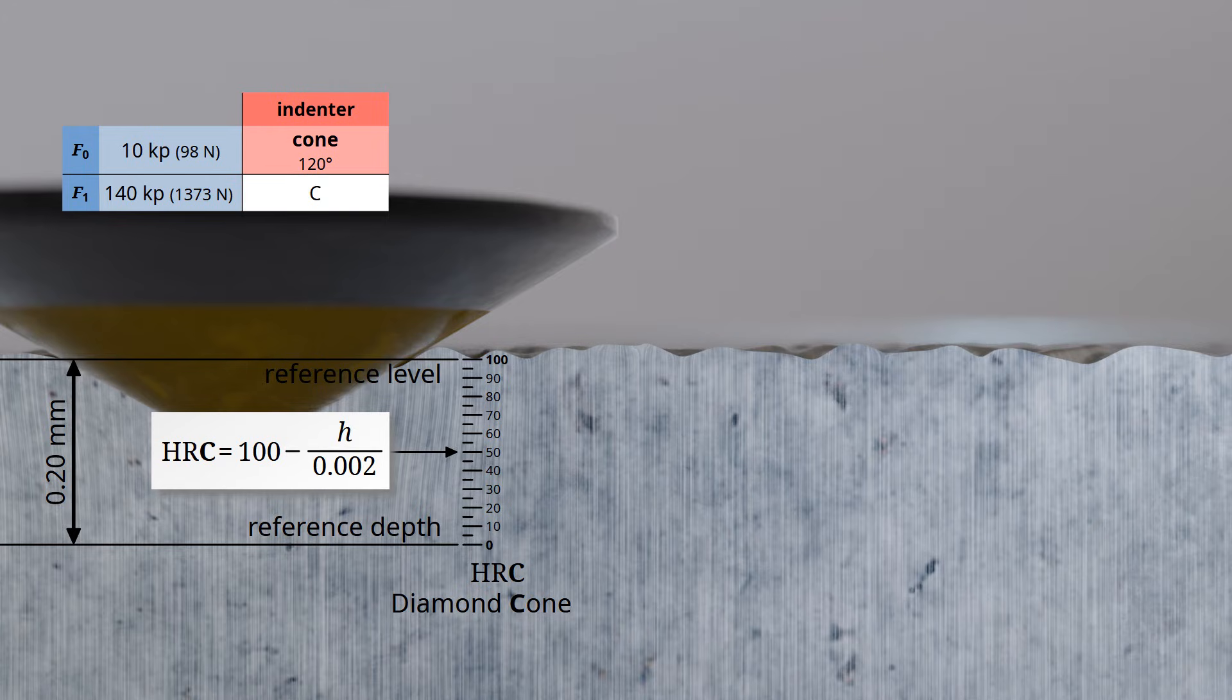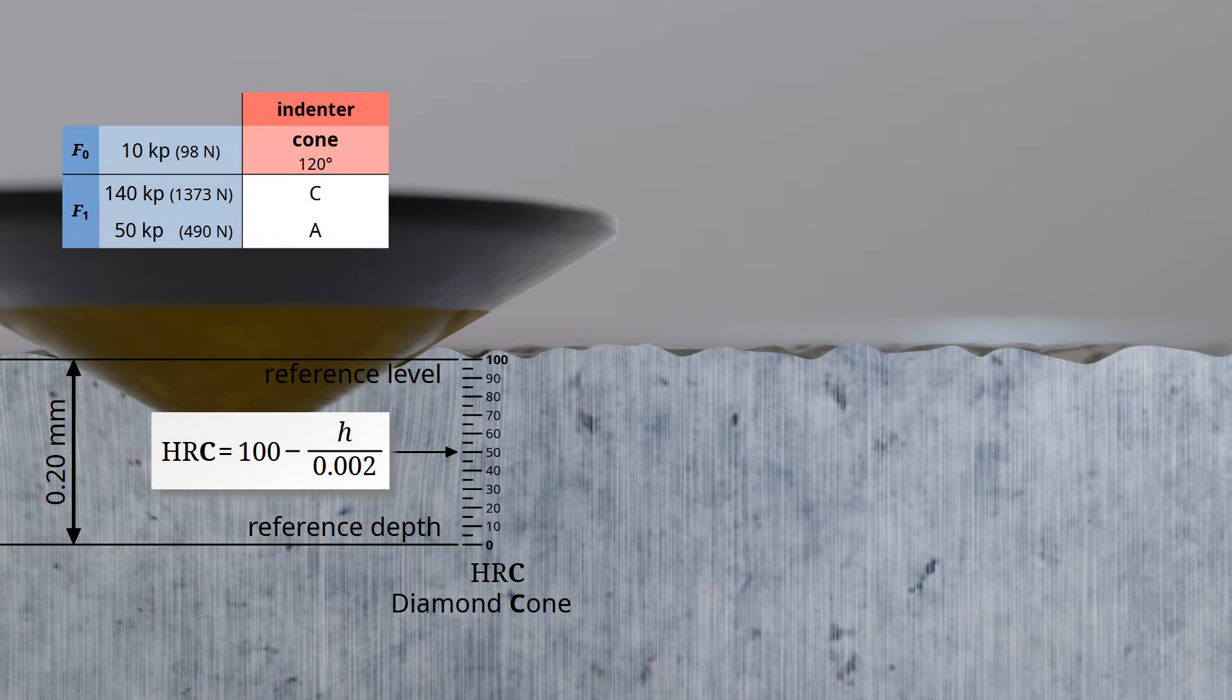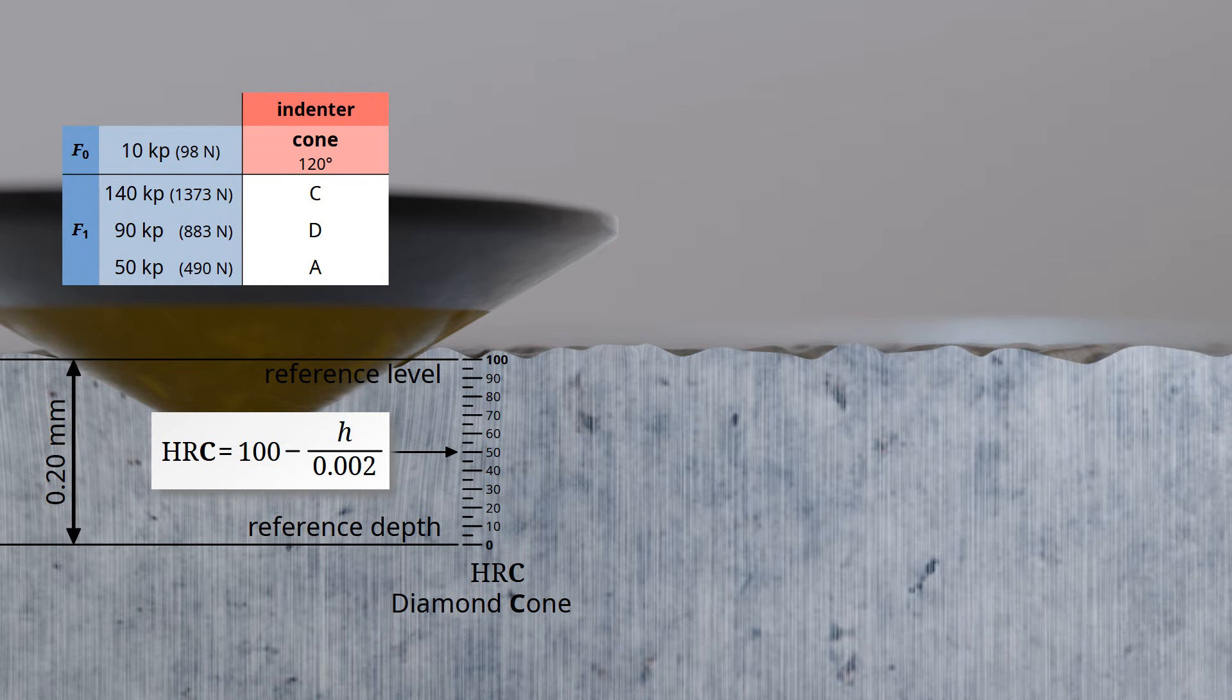However, especially when testing thin sheets, there is a risk that such high test forces may cause the material to bulge out on the opposite side, thereby falsifying the measurement result. To address this, the test variant scale A was introduced for diamond cone testing, which uses a reduced test force of 50 kilopons, equivalent to 490 newtons. There is also a less common variant scale D, in which the hardness value is determined using a test force of 90 kilopons, equivalent to 883 newtons. For test variants C, D, and A, the hardness value is calculated using the provided formula.